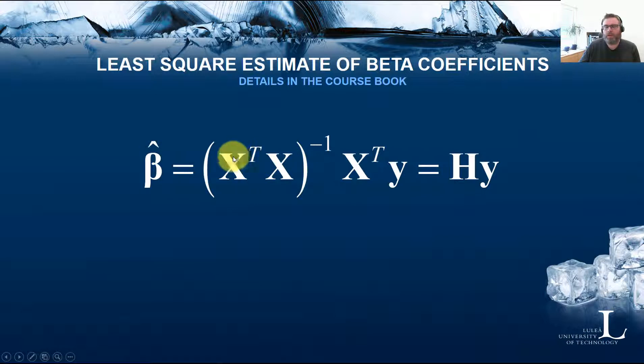We have the estimated values on the betas. They are given by X transpose X and the inverse of that times X transpose times y. This is also the reason for me to talk about the transpose, which we need in this case, and the inverse that we need in this case.